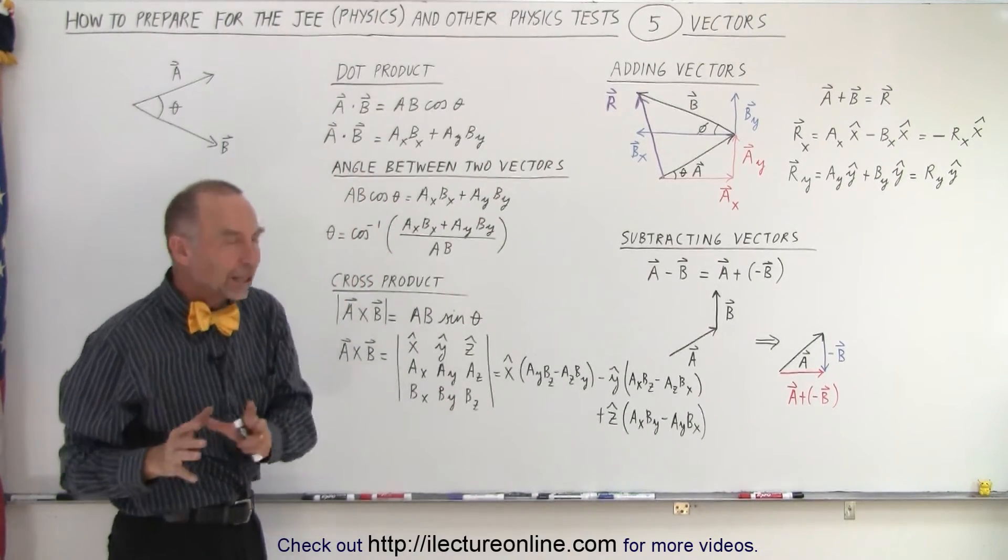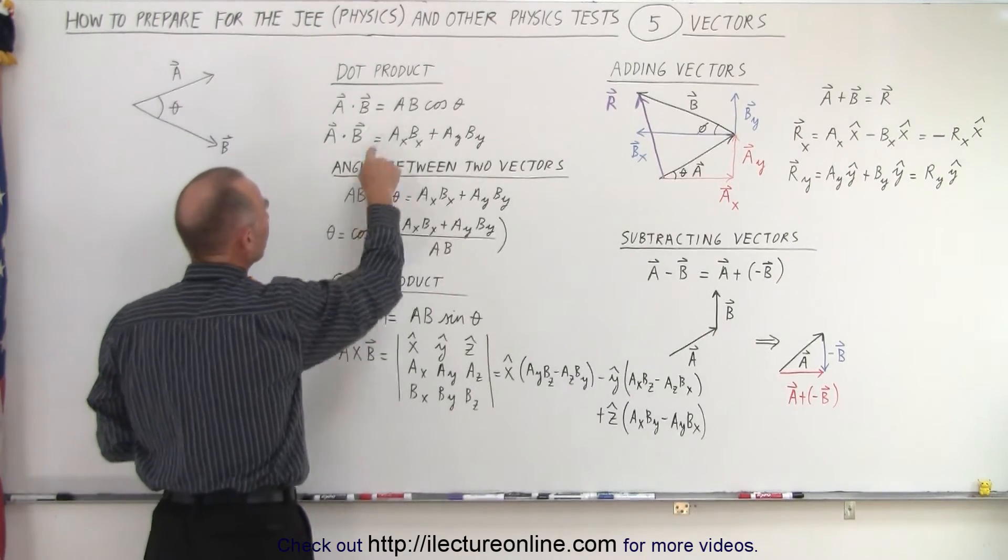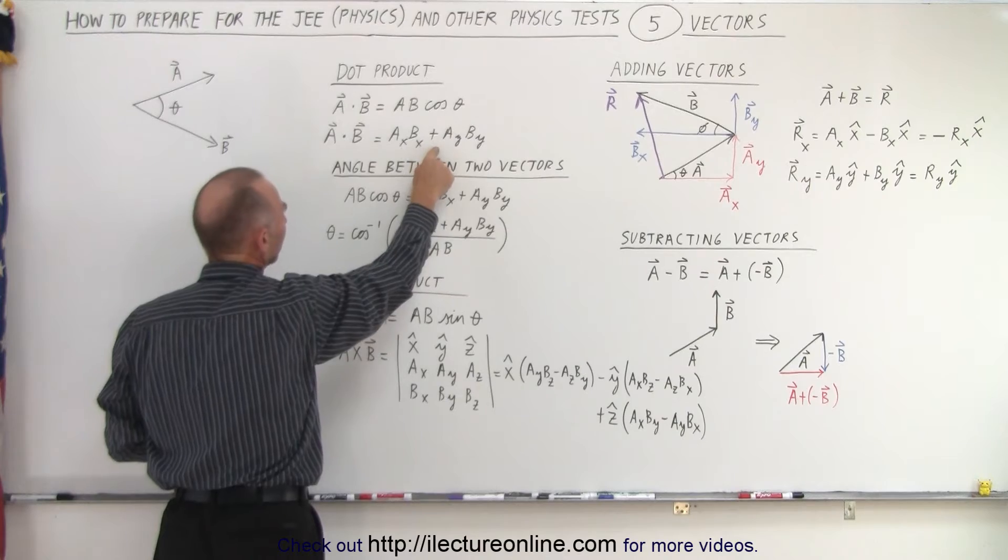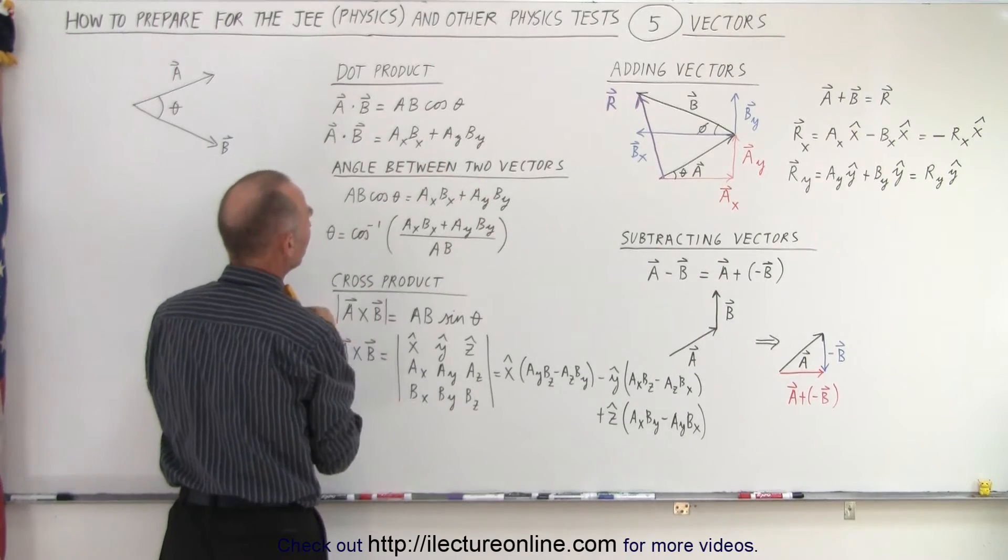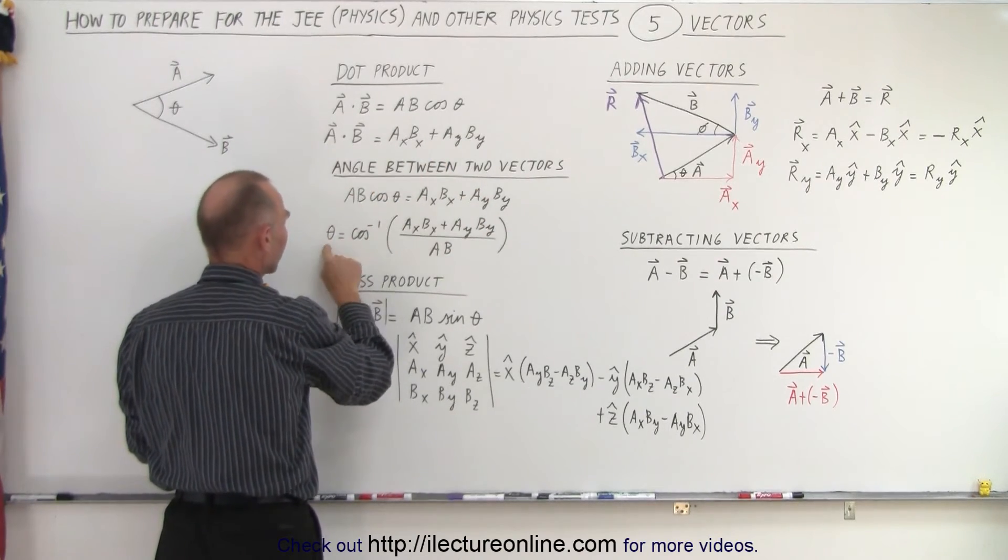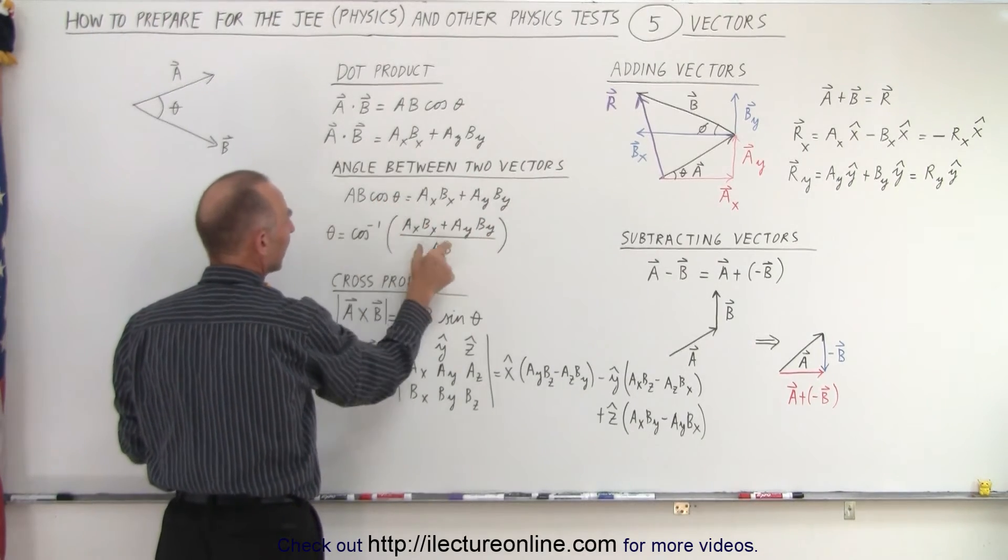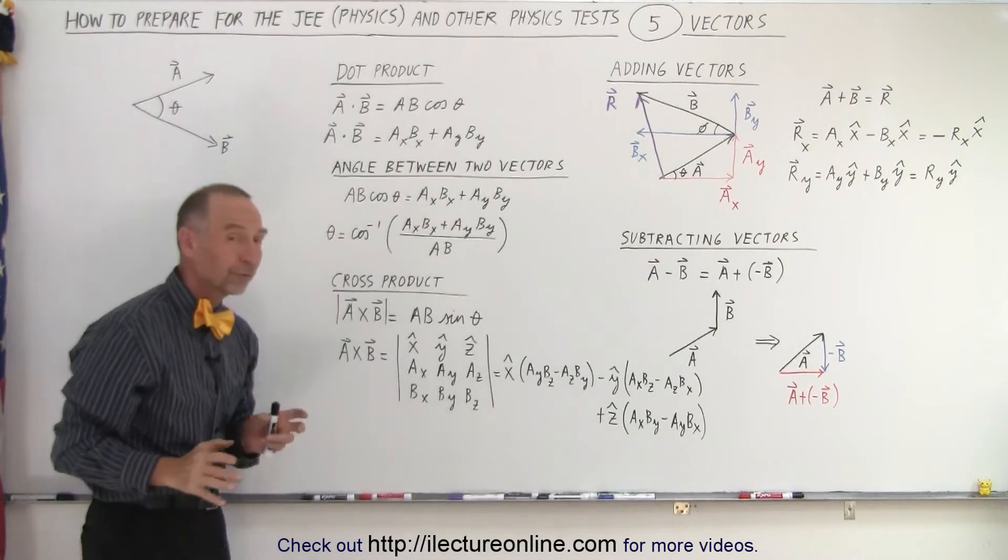If you need to find the angle between two vectors, you can use this principle that A dot B can be written like this or it can be written like that. You set those two equal to each other, solve for cosine of theta, then solve for theta, which is the inverse cosine of this divided by the magnitude of A times the magnitude of B.